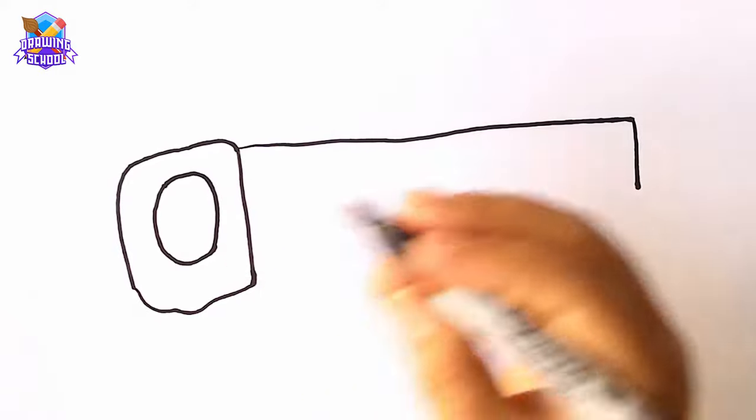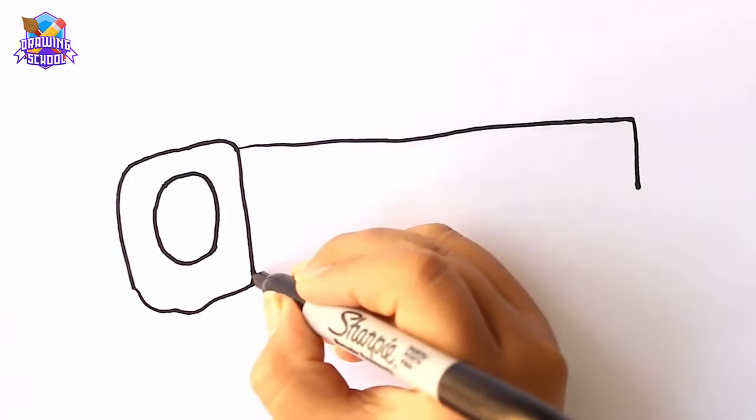From here, we draw a line going up and down, drawing V-shapes for the saw.